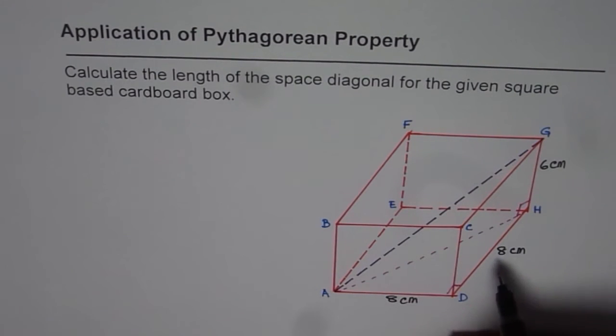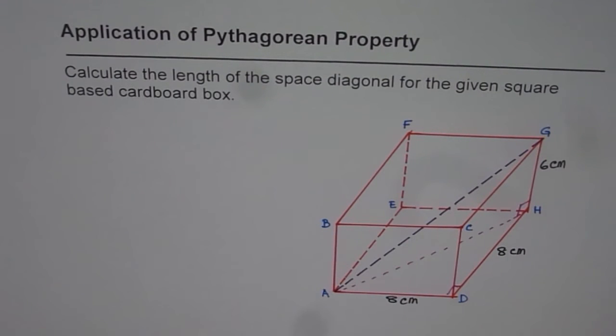So twice we are going to use the Pythagorean property to find the space diagonal. So that is how this question should be solved.